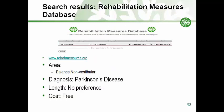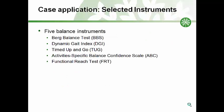Let's return to the Rehabilitation Measures database introduced in an earlier module. The URL rehabmeasures.org takes you to a search interface. The selection options include: area of measurement — balance, non-vestibular; diagnosis — Parkinson's disease; length of test — no preference; and cost — free tests only. The search results in five balance tests: the Berg Balance Test, the Dynamic Gait Index, Timed Up and Go, the Activity Specific Balance Confidence Scale, and the Functional Reach Test. We have narrowed a longer list to these five instruments for demonstration purposes only.